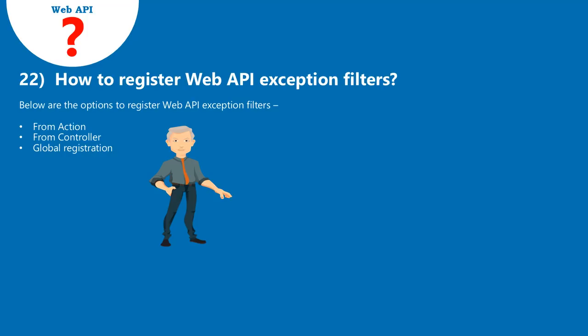Question 22: How to register Web API exception filters? Below are the options to register Web API exception filters: from Action, from Controller, and Global Registration.